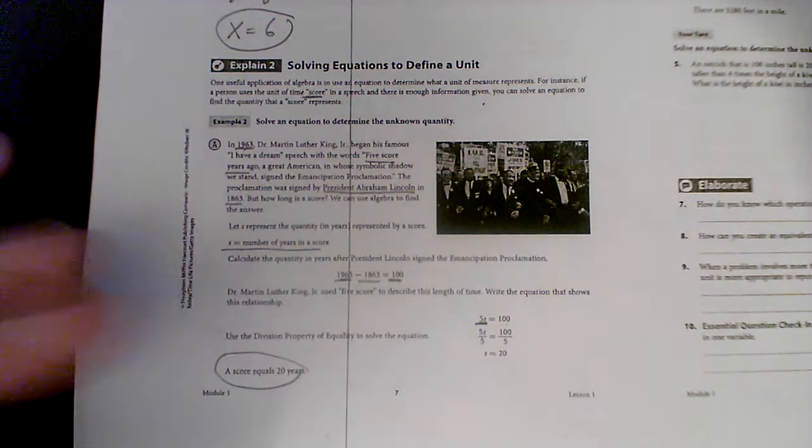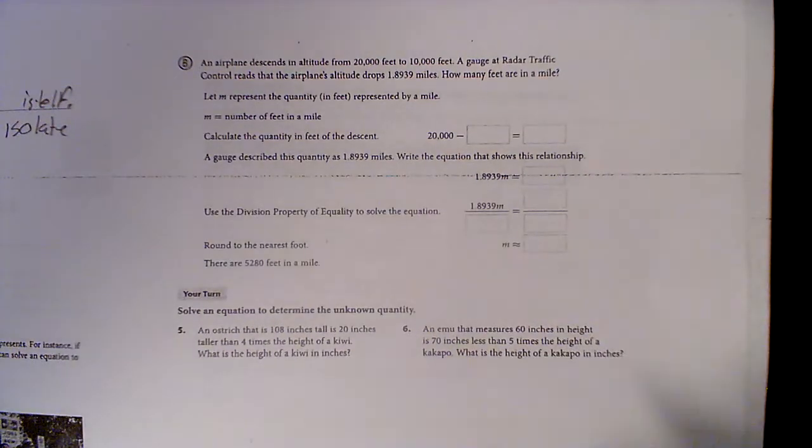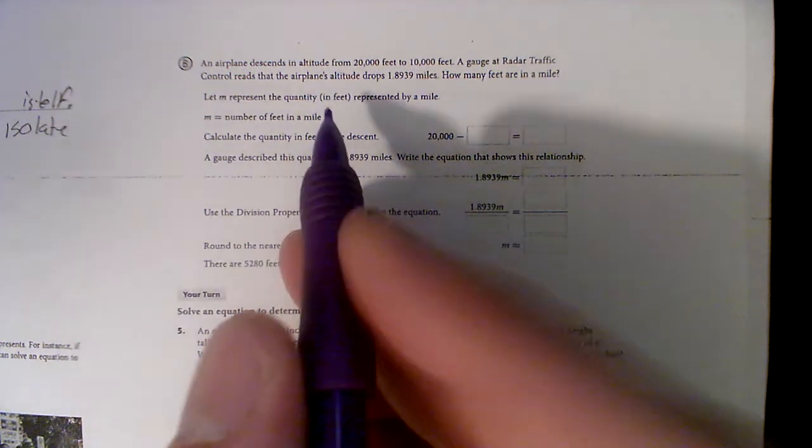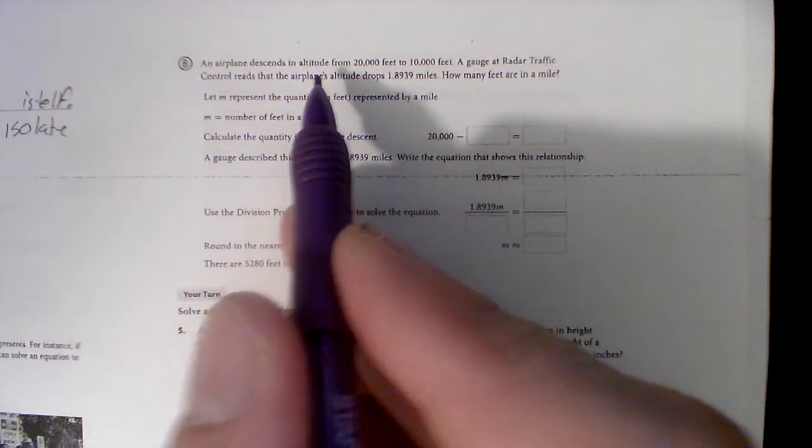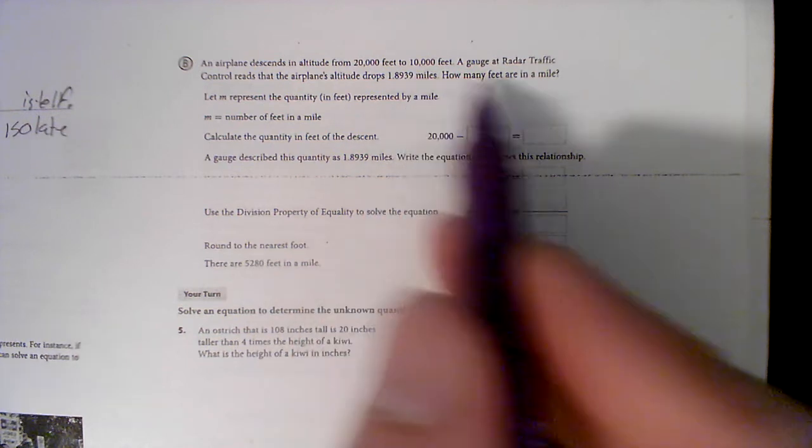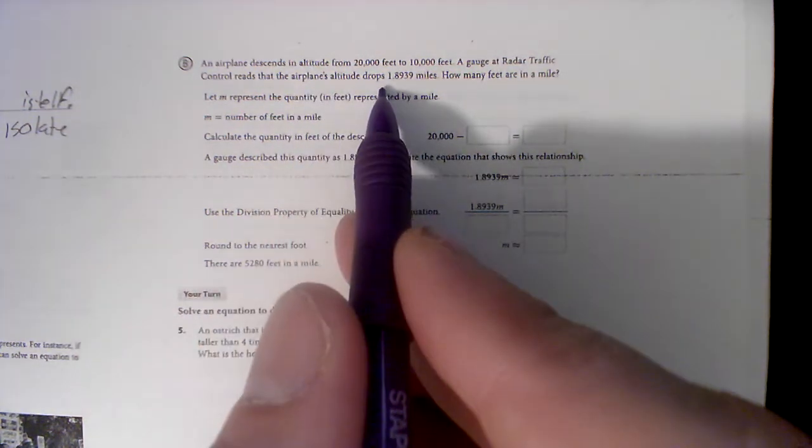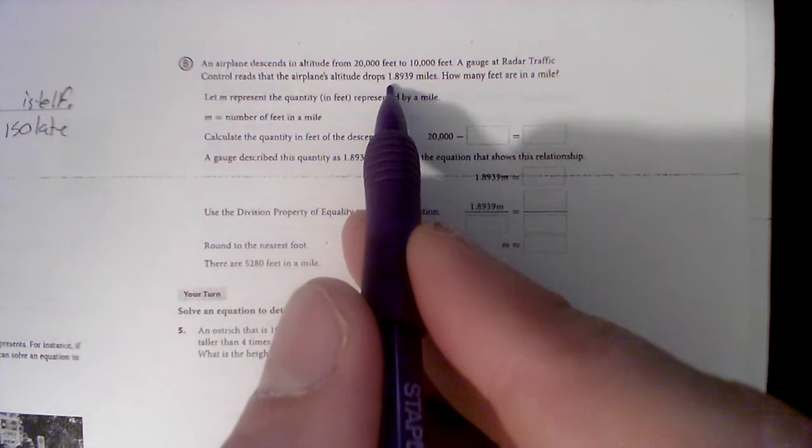And therefore a score is 20 years, and all we got to do is figure out how to set it up and then use inverse operations. So there's another example here. I'm going to scroll down just a little bit, zoom in - it's weird because I'm making the camera a little closer.